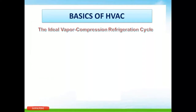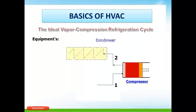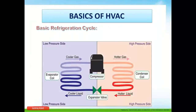Now let us understand the vapor compression refrigerant cycle. The first and major equipment in any refrigeration cycle is the compressor. The refrigerant is compressed in the compressor and then transferred to the condenser where heat is rejected - either air-cooled or water-cooled. Then the refrigerant passes through an expansion valve, and finally through the evaporator where the actual cooling happens. Two different pressures exist in a refrigeration cycle.